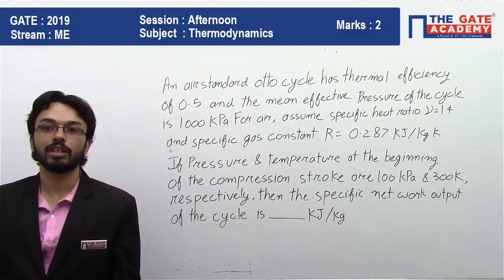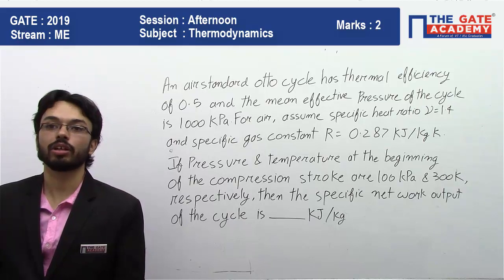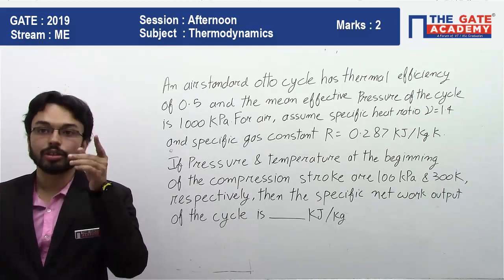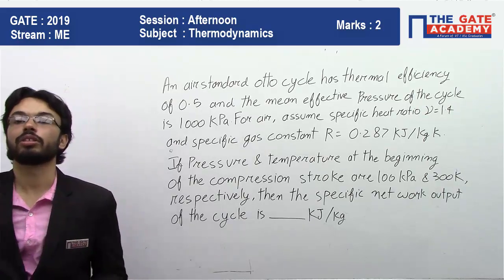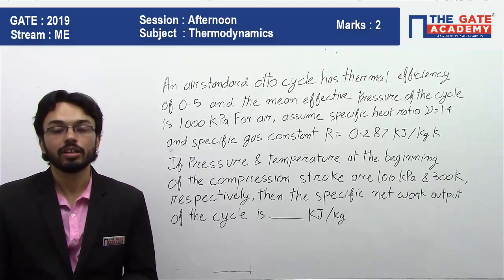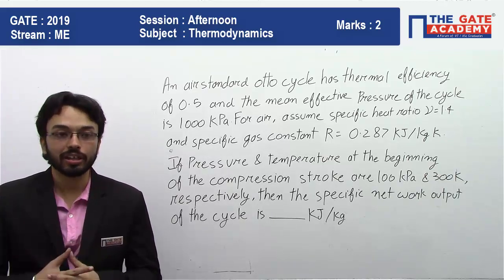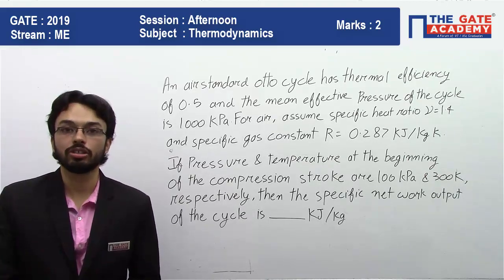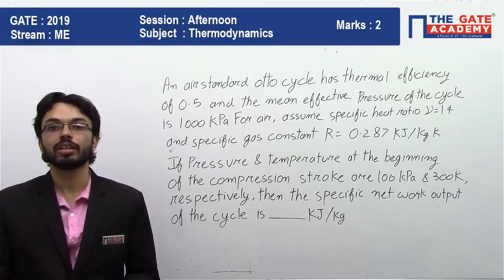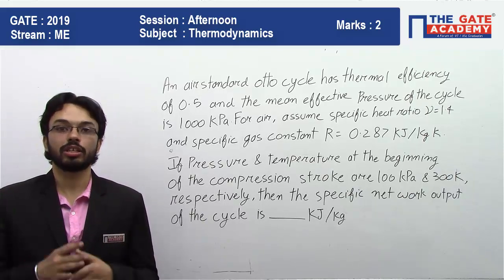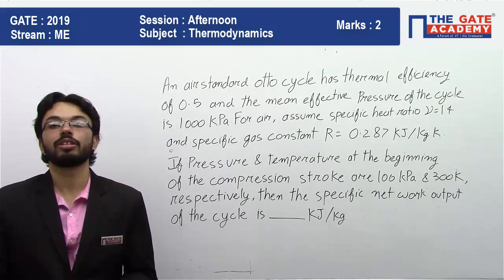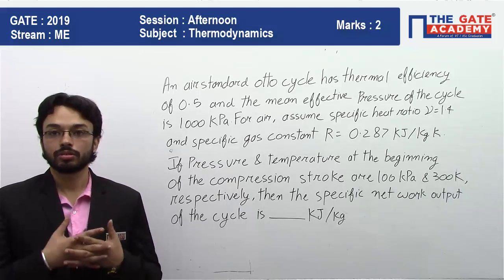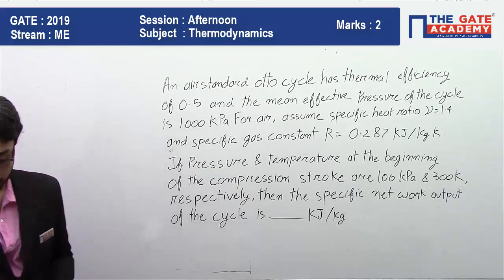They are asking for the specific net work output of the cycle, with units in kilo joule per kg. Basically, if you consider one kg of mass going through the cycle, how much work is produced per kg of mass? Now let's see how to solve this question.